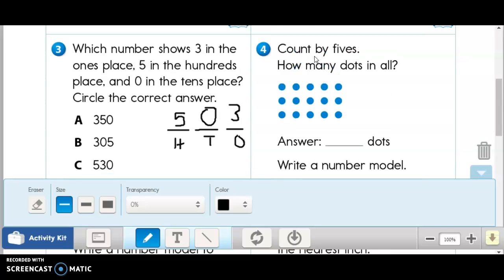Now, number four says, count by fives. How many dots in all? All right. Let's be able to try here. What do we have here? Five, ten, fifteen. Fifteen dots in all.